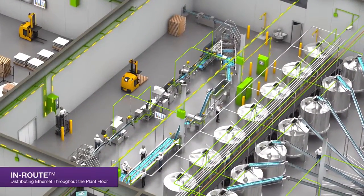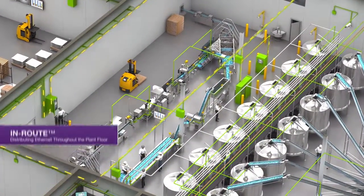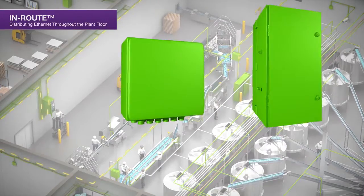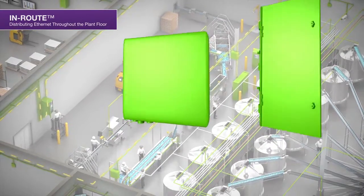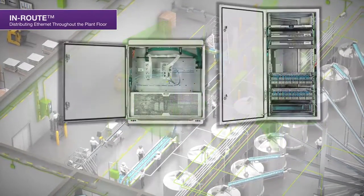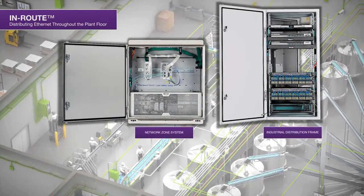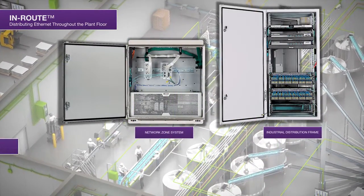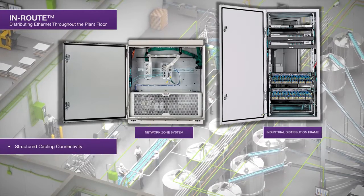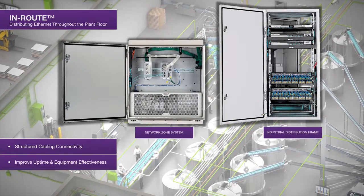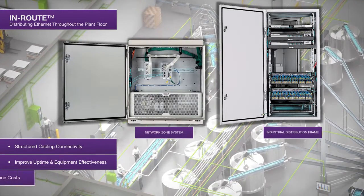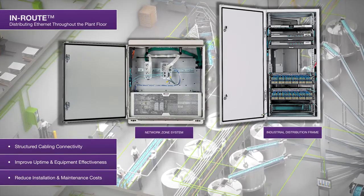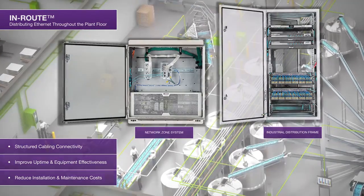Panduit in-route solutions distribute Ethernet throughout the plant floor. Our network zone systems — pre-configured industrial distribution frames with fiber-structured cabling and connectivity — connect switch to switch, improve uptime and overall equipment effectiveness, and reduce installation and maintenance costs.